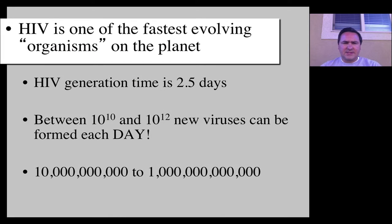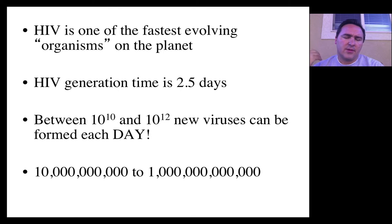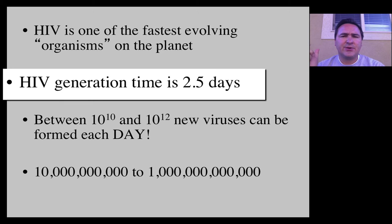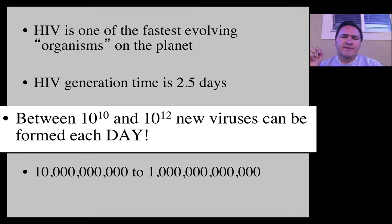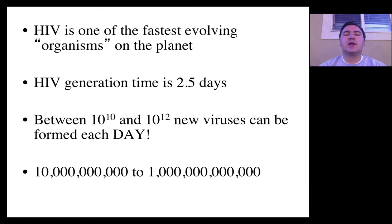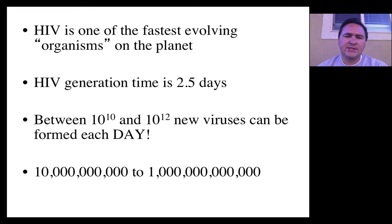HIV is one of the fastest-evolving organisms. Once it gets inside the blood and starts to infect a white blood cell, it only takes about two and a half days to begin reproducing more viruses. Once a host has many white blood cells infected, the virus can produce 10 to the 10th or 10 to the 12th new viruses every day — huge numbers. And remember that 20% of those viruses carry different mutations.